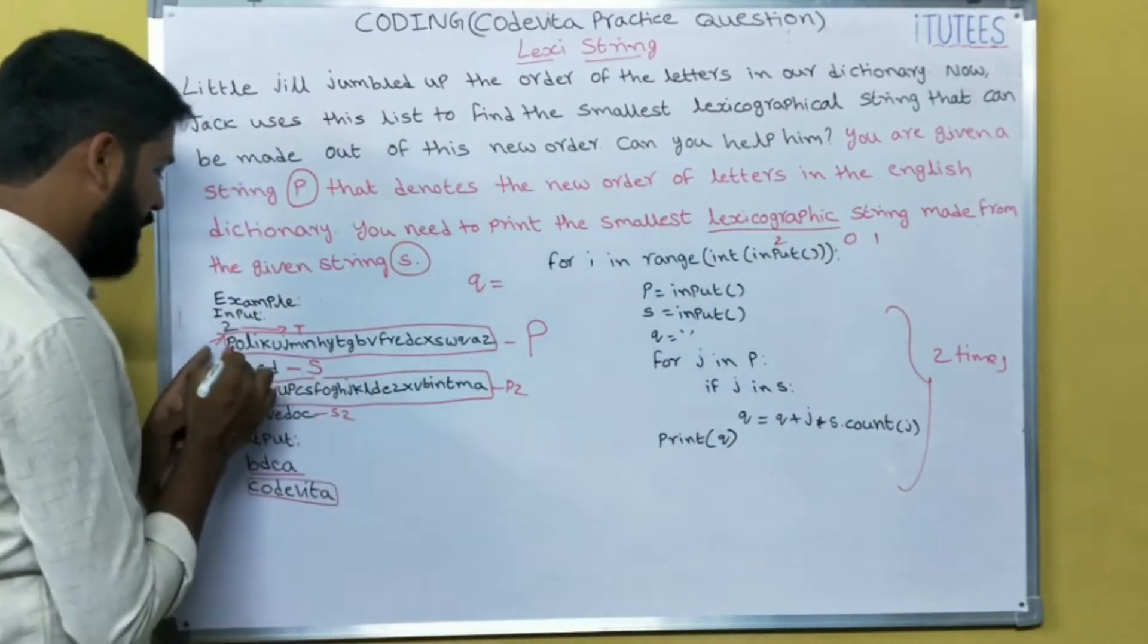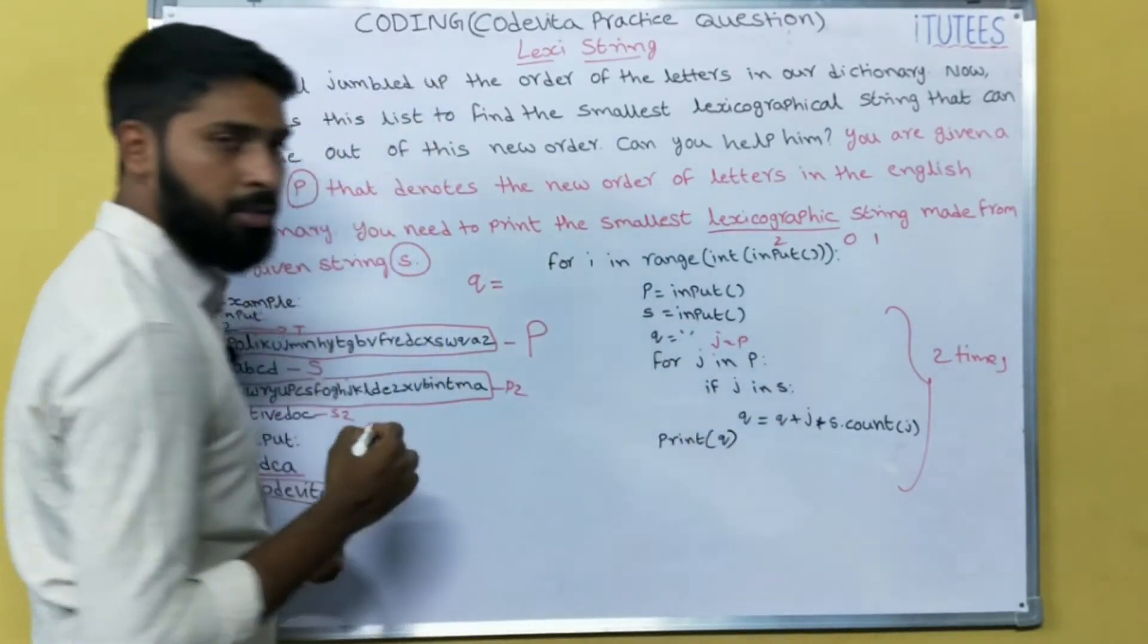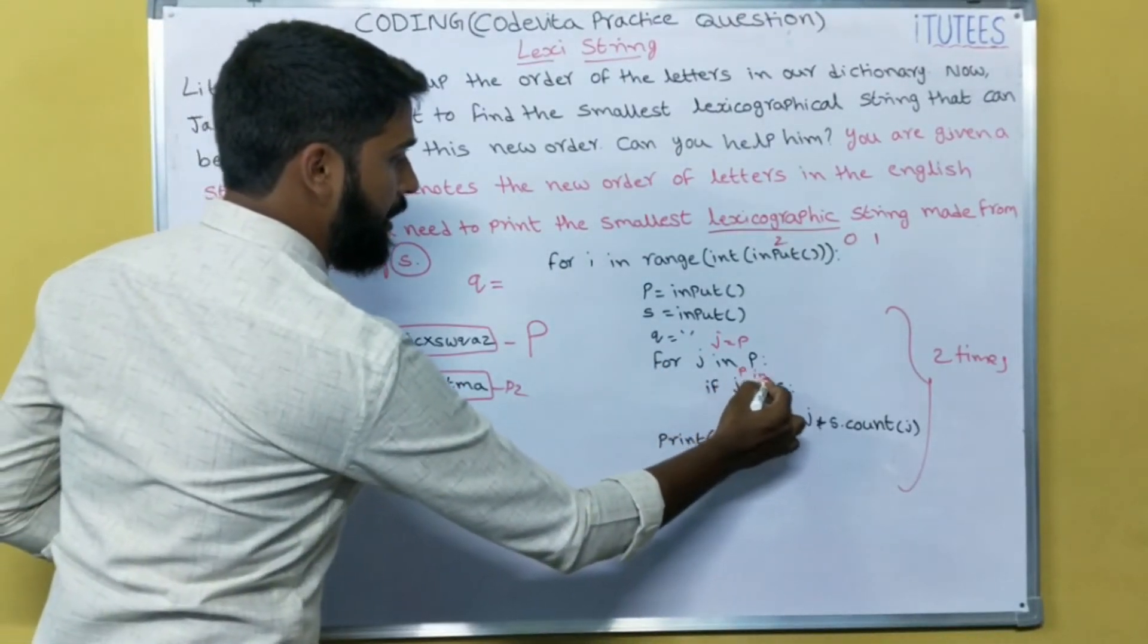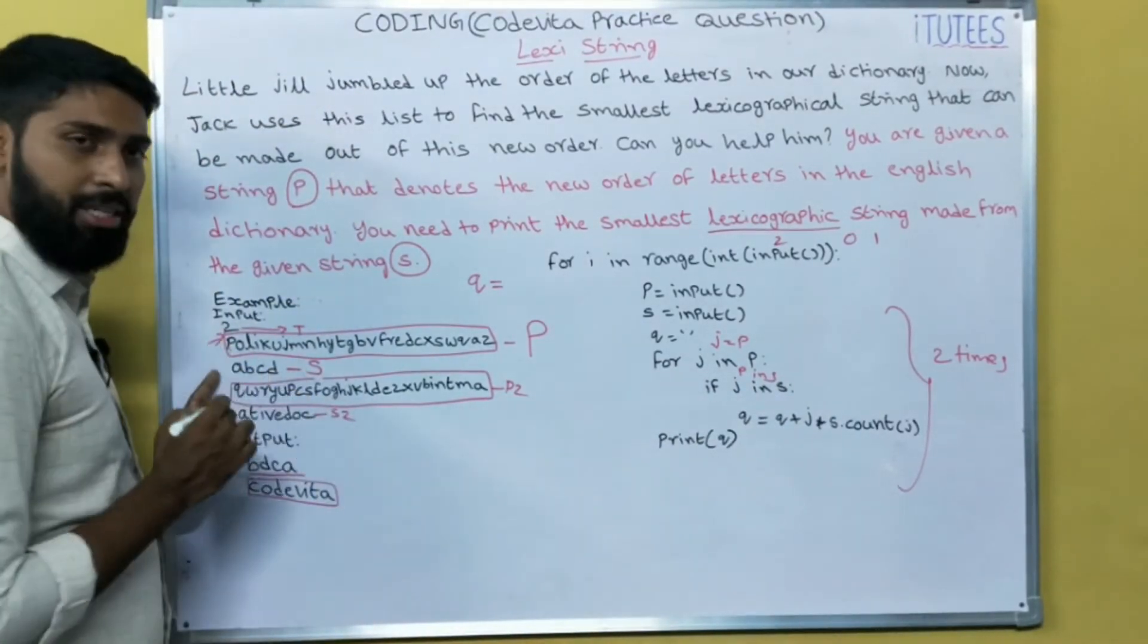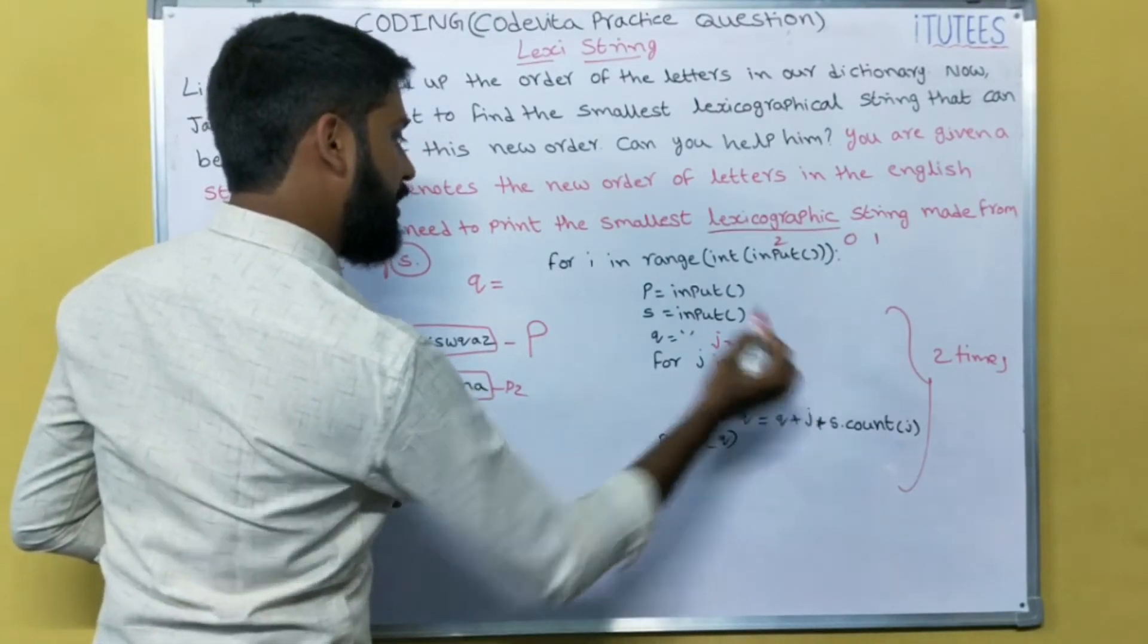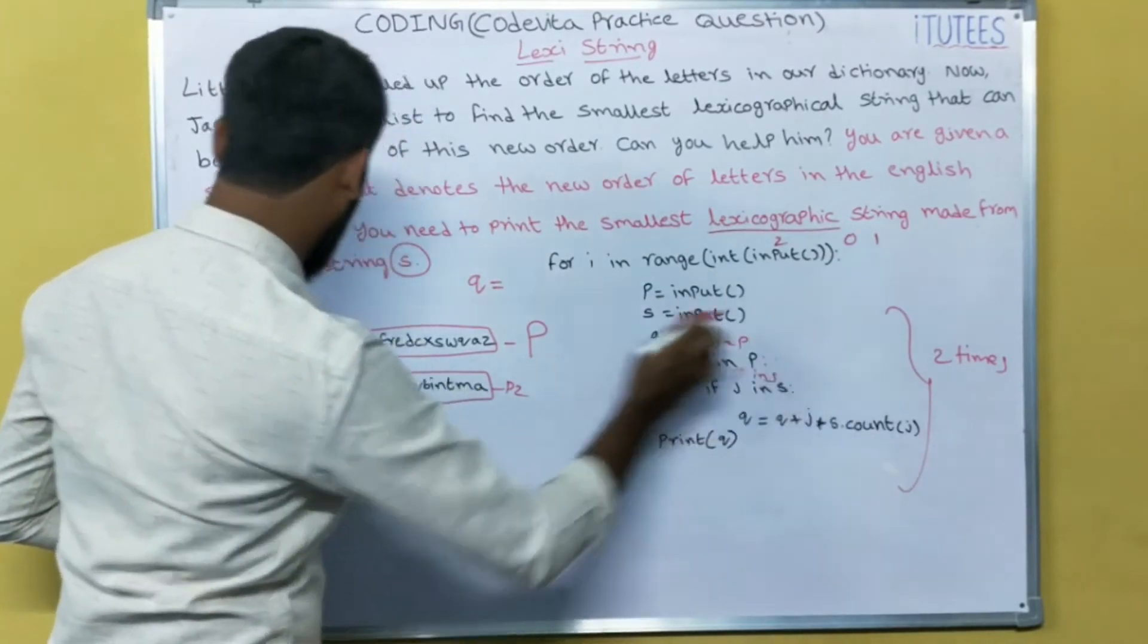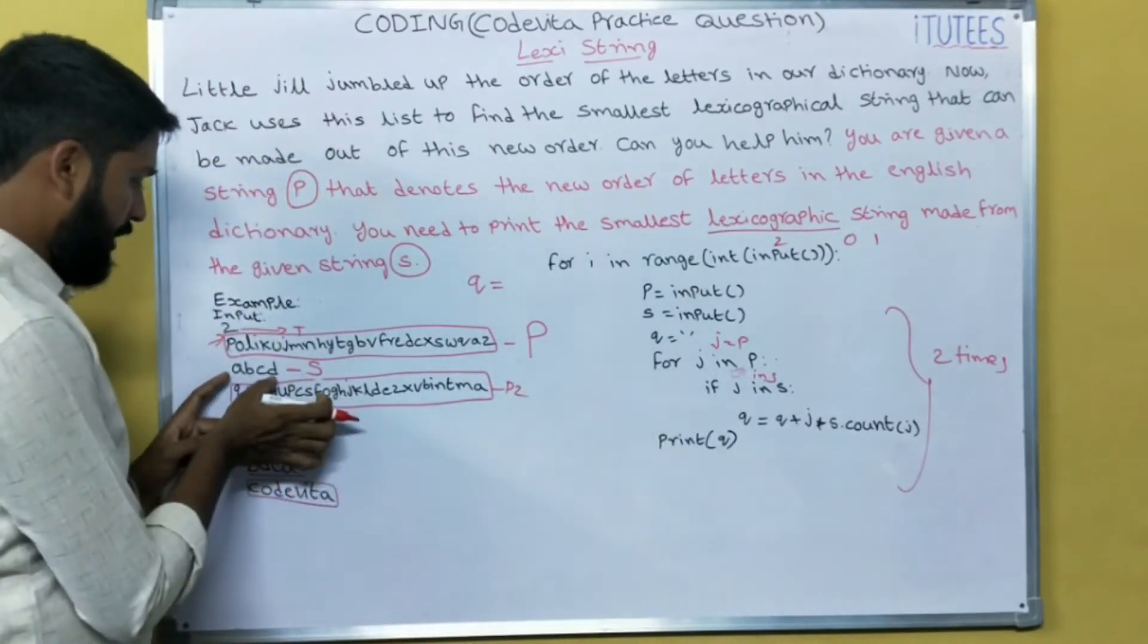For J in P, the J equals to P. All are small letters. If J in S, that means P in S. So what is the S? A, B, C, D. So P is in S? No. So go to next one. P no. O in S? No. Go to next one. L in S? No.